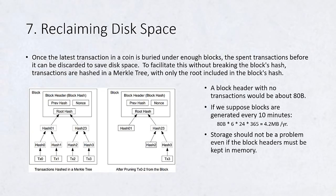A block header with no transactions would be about 80 bytes. If we suppose blocks are generated every 10 minutes, 80 bytes times 6 times 24 times 365 equals 4.2 megabytes per year. With computer systems typically selling with 2 gigabytes of RAM as of 2008, and Moore's law predicting current growth of 1.2 gigabytes per year, storage should not be a problem even if the block headers must be kept in memory.